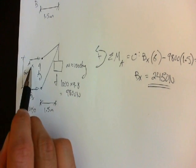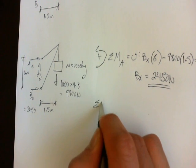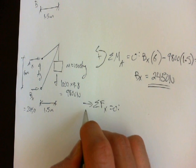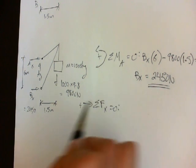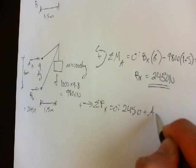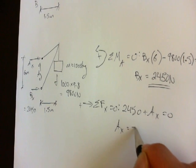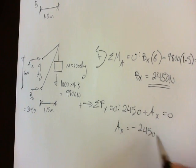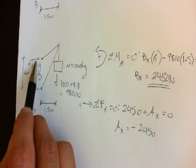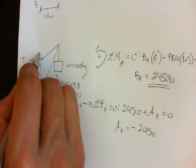Now to find AX, just sum the forces in the X direction. Sum of forces in the X equals zero. Again, going this way is positive. So 2,450 plus AX equals zero. Therefore AX equals negative 2,450. Now on our diagram, we assume that AX is going this way. And since we've got a negative number, it means that it's actually going this way.